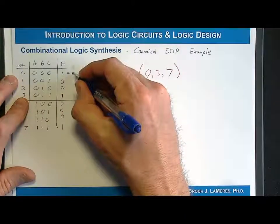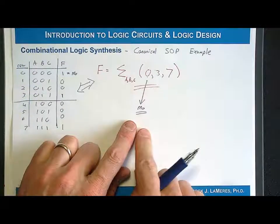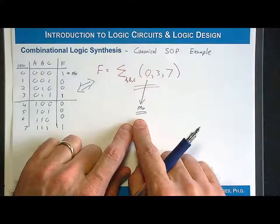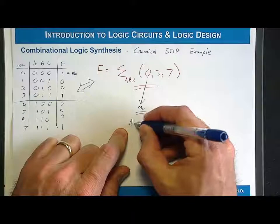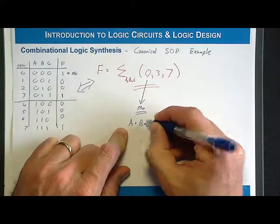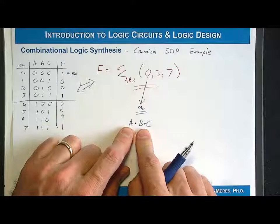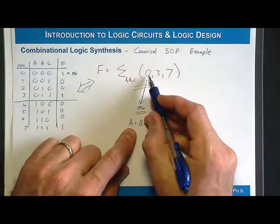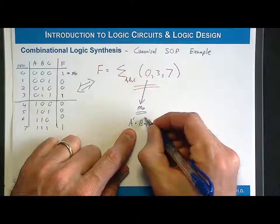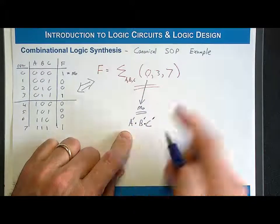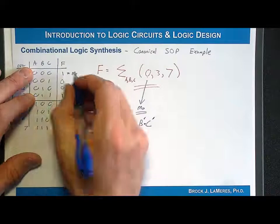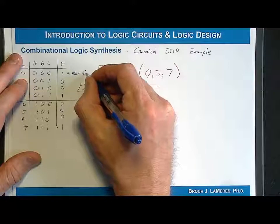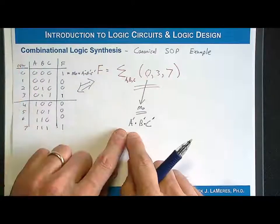We can do it directly from the minterm list, because a minterm is a product term that has all the variables in it — so that means I have A, B, and C. But this minterm only asserts for one and only one input code, so I put inversions on the input variables to make it assert for a particular code. It needs to assert for code 0, so I put an inversion on all three of them. So M0 = A'B'C'.